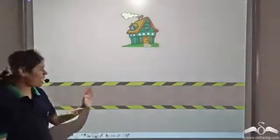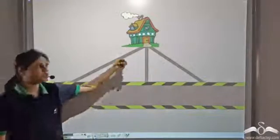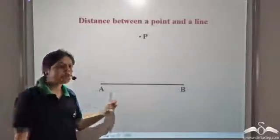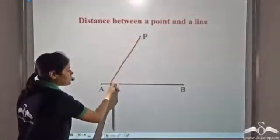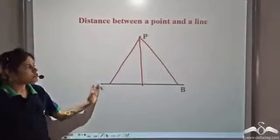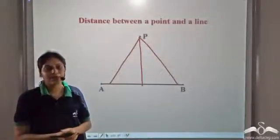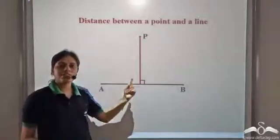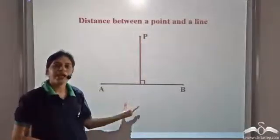Now say you want to go to any point on the street from your home. These are the three roads connecting the street to your home — which route should you take? Consider your home to be a point P and the street to be a line segment AB. We can go from P to AB in a number of ways, and we see that there are many possibilities. But the distance between point P and line segment AB is given by the perpendicular distance from point P to line segment AB.